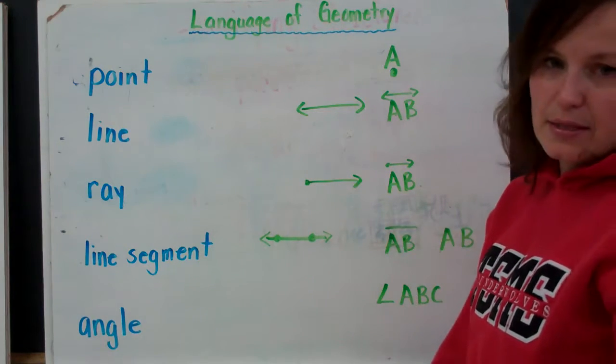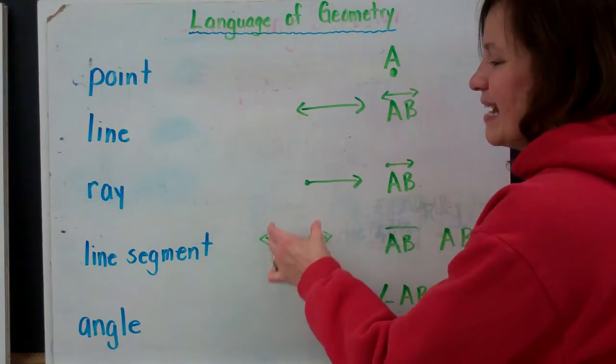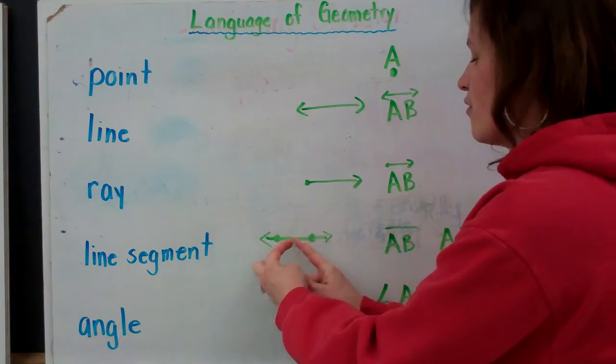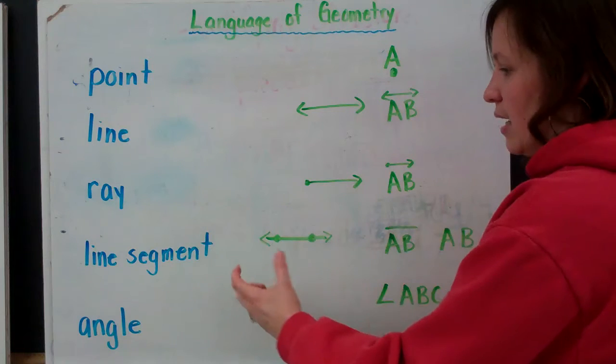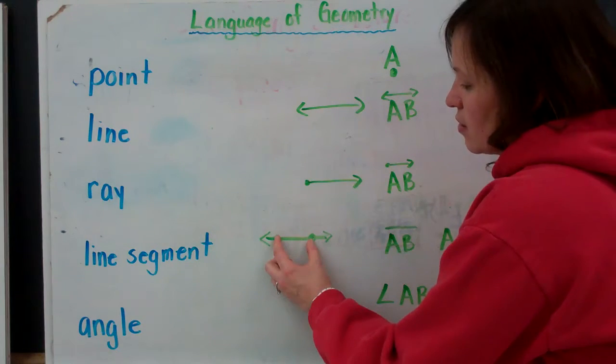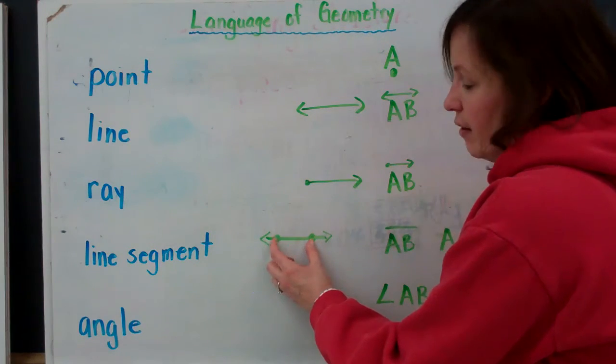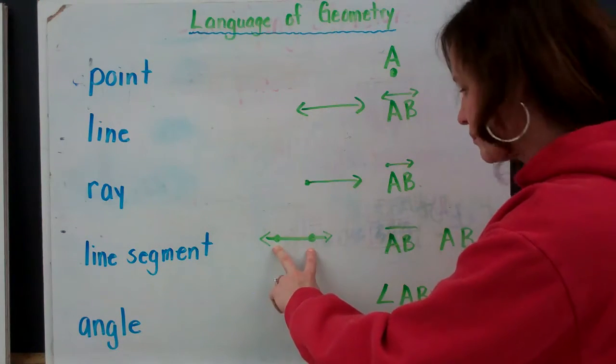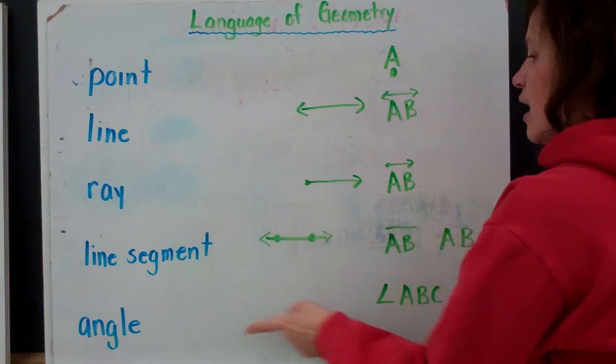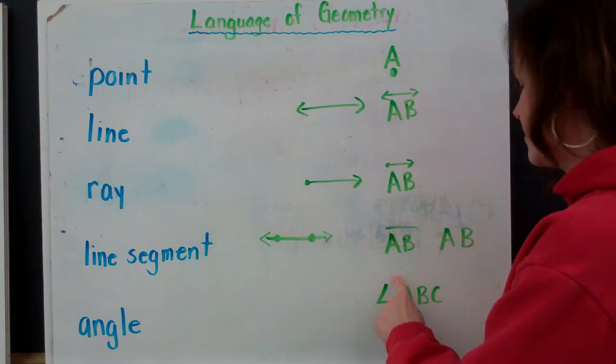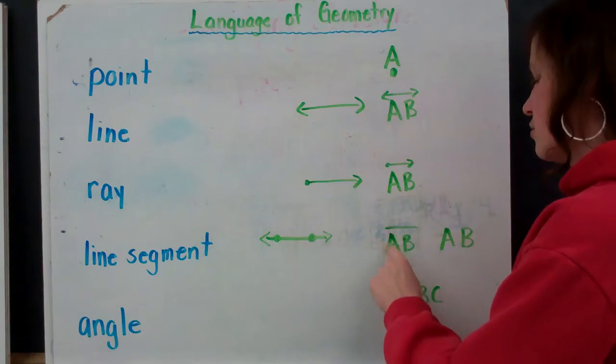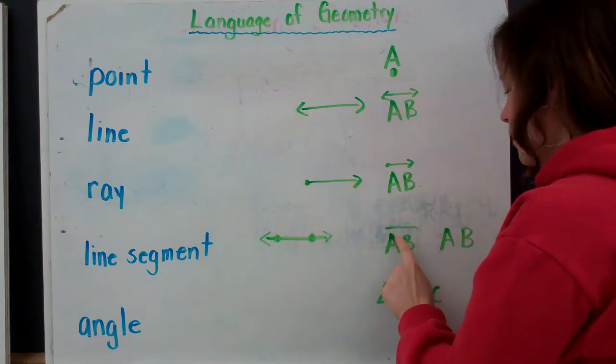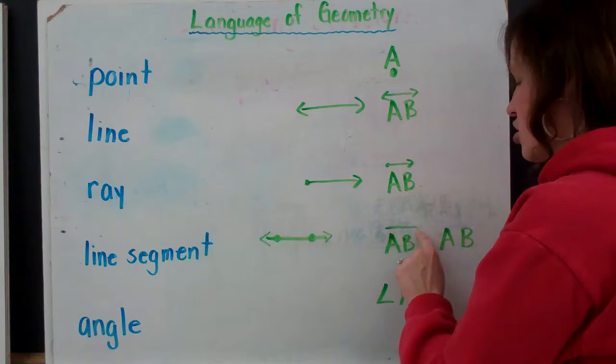Line segment. Line segment differs from line in that it is a section of a line. So, we have the line with the arrows extending. But our line segment, we're only just talking about a portion of that line. And the section is identified with two points, as you can see here. If I want to identify my line segment, I write capital letters A, B, but I don't write this symbol because that's for line. The symbol for line segment is just a straight line.